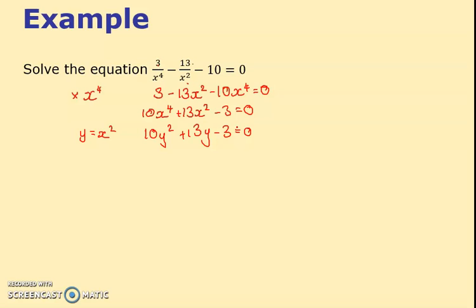Chuck that into a calculator: 10, 13 is my b, and negative 3. It says x1 equals but I know now it's y equals, and it's a fifth, so y is a fifth. The other solution is minus 3 over 2.